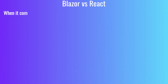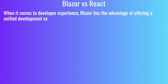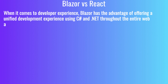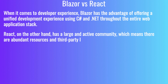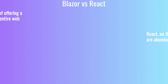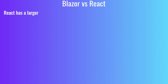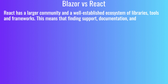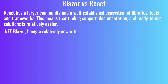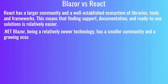Developer Experience: Blazor has the advantage of offering a unified development experience using C# and .NET throughout the entire web application stack. React, on the other hand, has a large and active community, which means there are abundant resources and third-party libraries available. Community and Ecosystem: React has a larger community and a well-established ecosystem of libraries, tools, and frameworks, making it easier to find support, documentation, and ready-to-use solutions. Blazor, being a relatively newer technology, has a smaller community and a growing ecosystem.